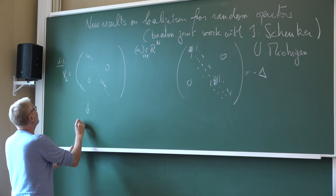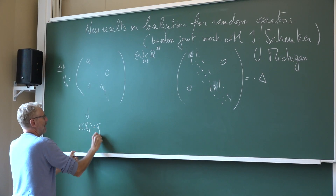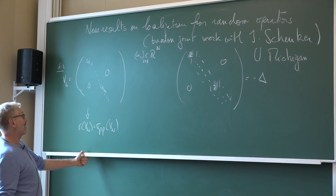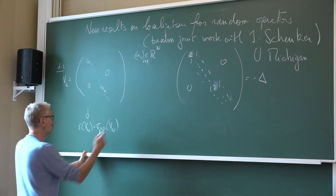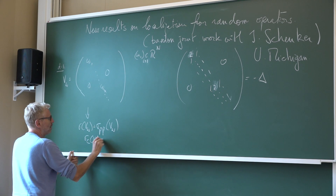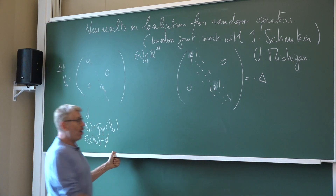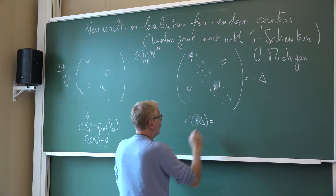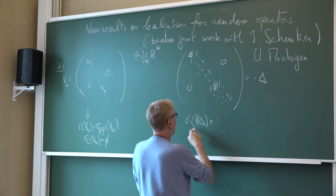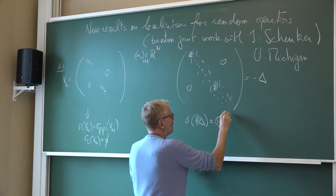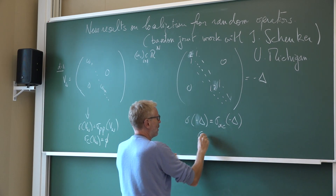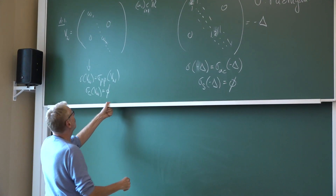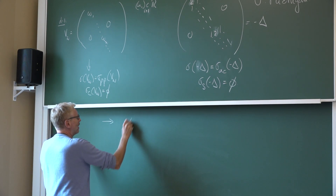For V_omega, the spectrum is made only of eigenvalues - the eigenvalues are exactly the entries written on the diagonal, and the continuous spectrum is empty. On the other hand, for minus-Laplacian, this is just the absolutely continuous spectrum of the Laplacian, and the singular spectrum is empty. The question is: what happens if I consider the sum of these two? Who wins?